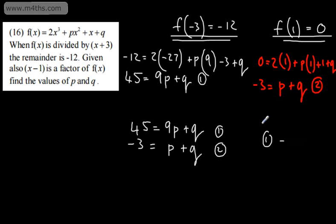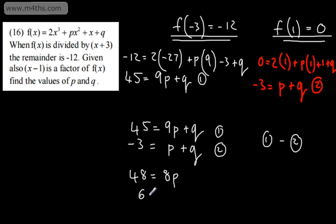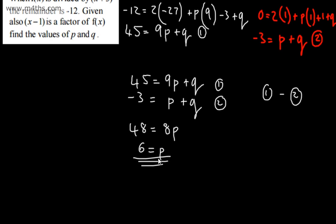Doing equation 1 minus equation 2 eliminates q: 45 minus (-3) is 48, and 9p minus p is 8p, so 48 equals 8p, giving p equals 6. Substituting p equals 6 into equation 2: 6 plus q equals negative 3, so q equals negative 9. Checking in equation 1: 54 plus (-9) does equal 45, confirming our answer. I've simply used the remainder theorem and factor theorem to solve simultaneously.